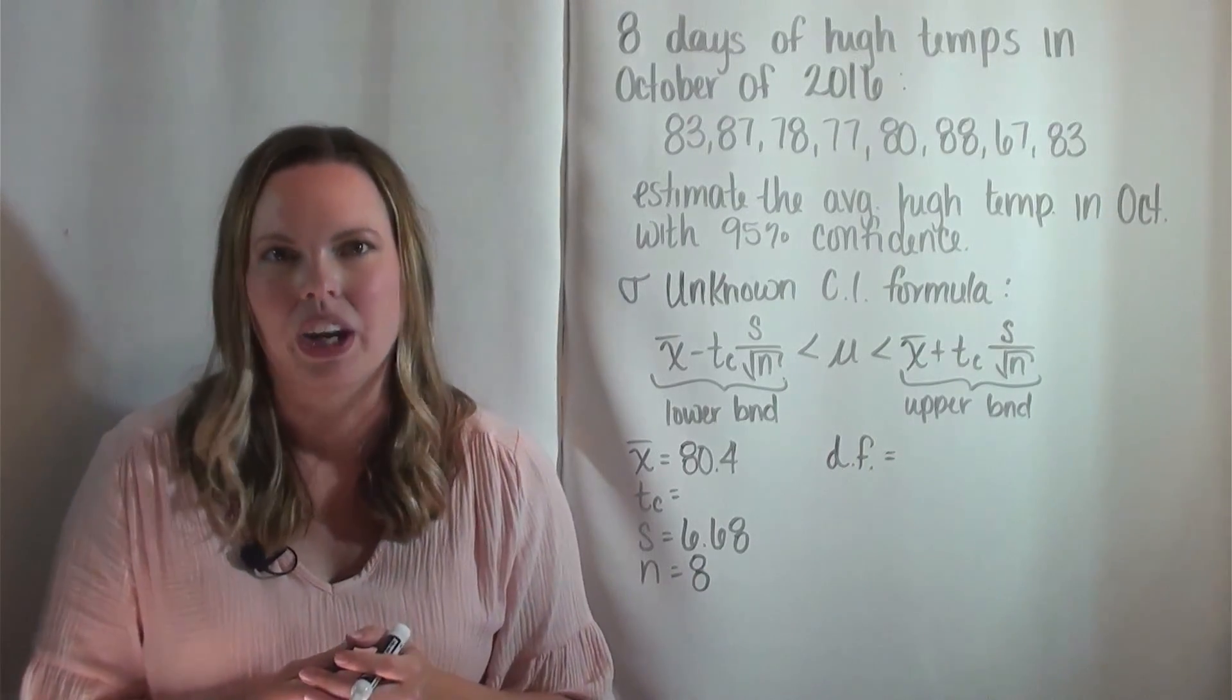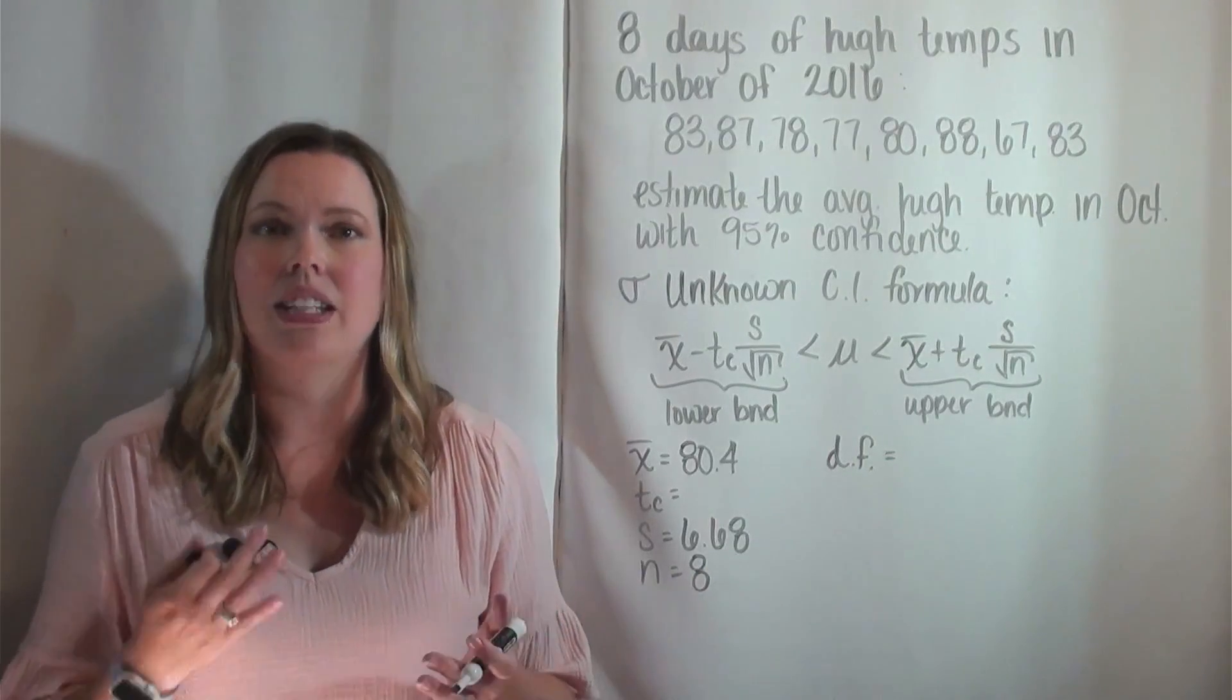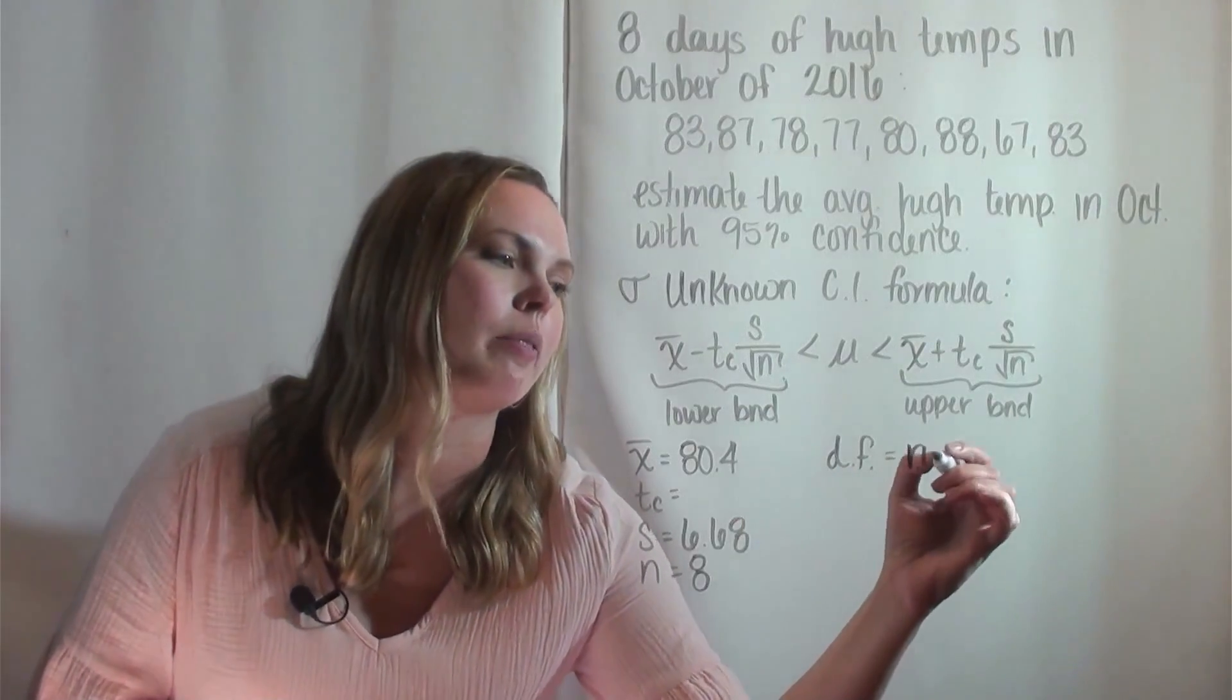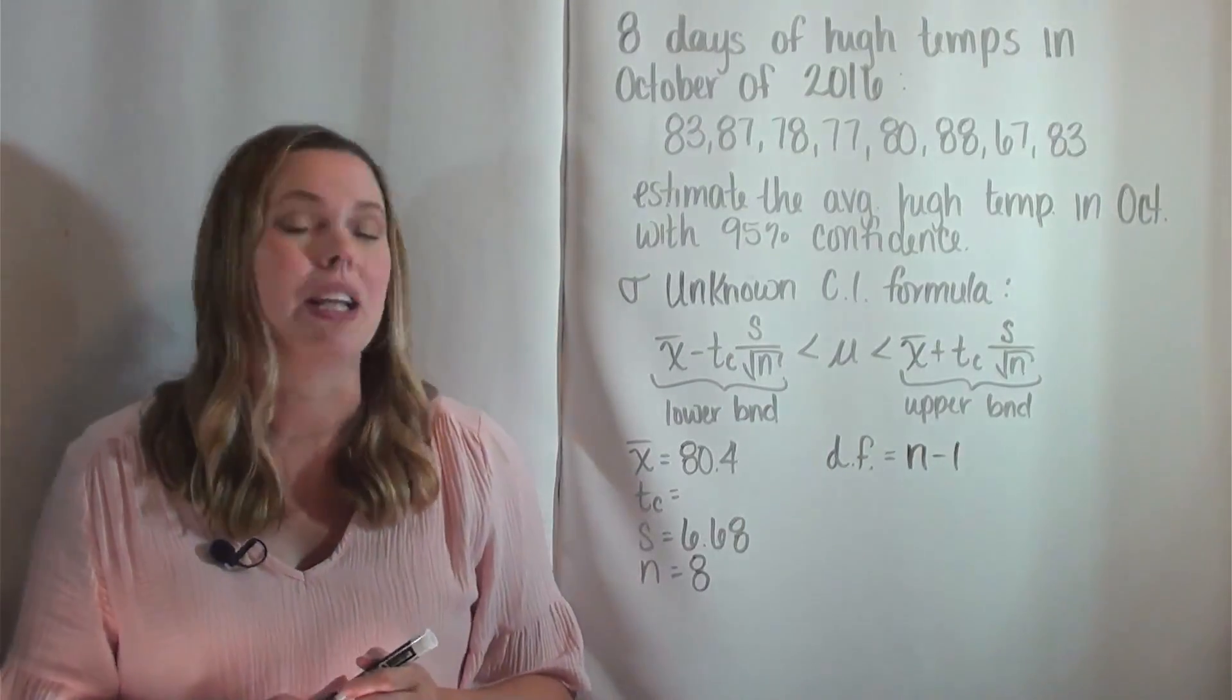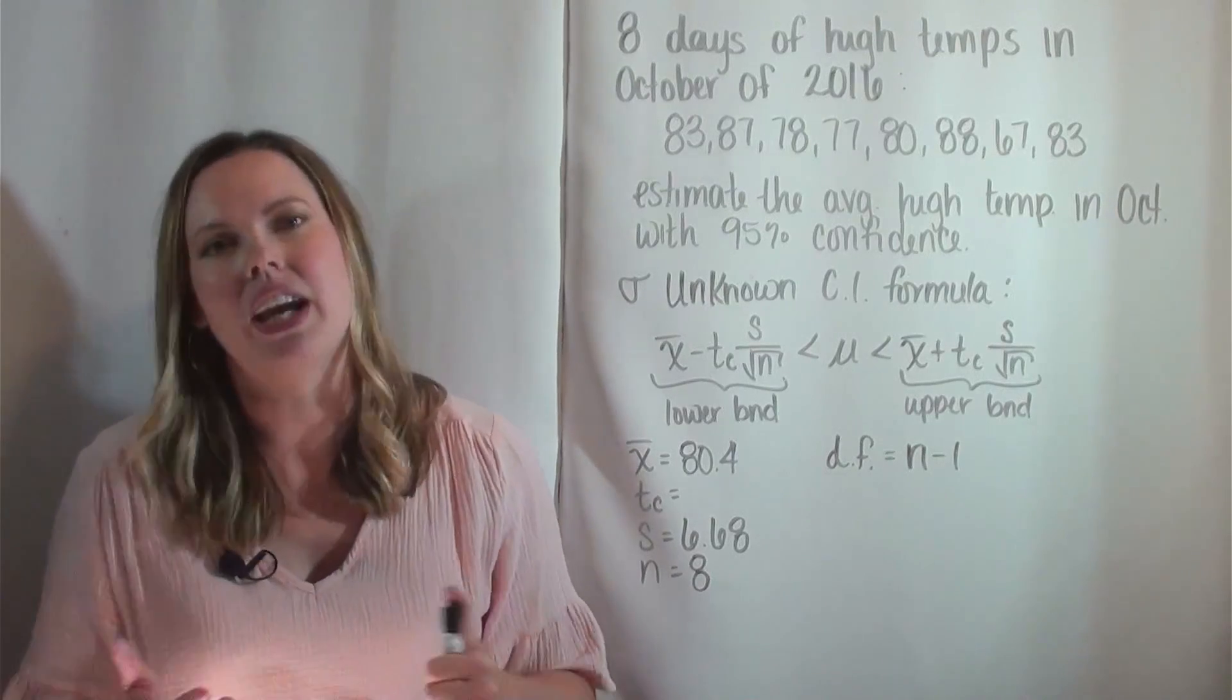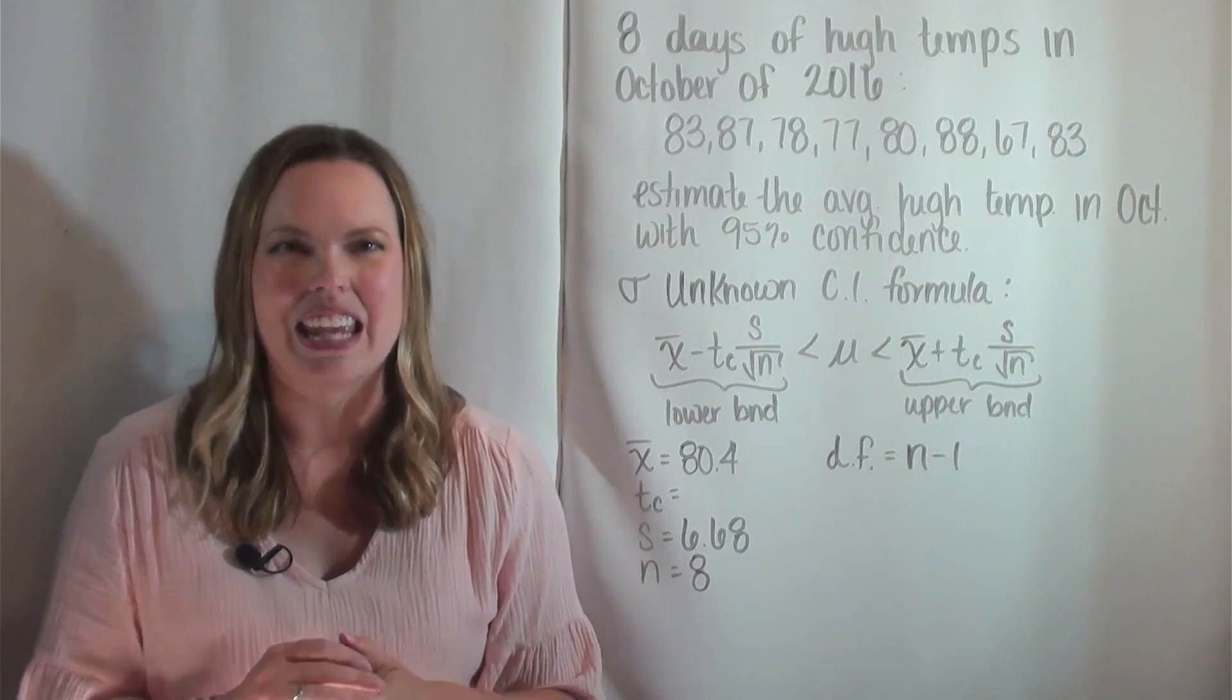The degrees of freedom, abbreviated DF on that chart, is different depending on what you're looking for. We are looking for the mean, and so for us, our degrees of freedom is N minus one. But it is different depending on what measure you're calculating, and that's why we use degrees of freedom and not N.